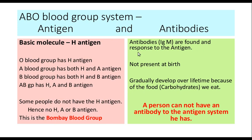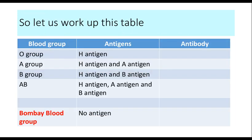The antibodies of the ABO blood group system are usually of the IgM class. They are not present at birth — they gradually develop over a lifetime, within the first 8 to 10 months, because of the carbohydrates we eat in our diet. Importantly, if a person expresses a particular antigen, they will not form antibodies against that antigen, as it is a self-antigen. For example, a person with A antigen will not produce antibodies against A.